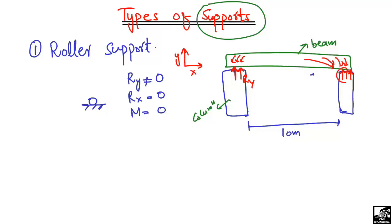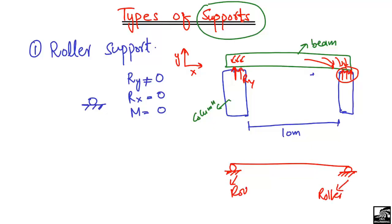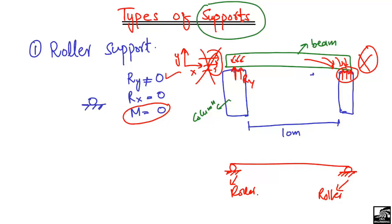The beam load acts downward, and each support takes the vertical reaction — the load is distributed, with half going to each support as vertical resistance. In a free body diagram, this beam is supported by two roller supports. Roller support is used only to take the vertical reaction; horizontal resistance equals zero and moment equals zero. When vertical reaction is not equal to zero and the other two reactions are zero, we call it a roller support.